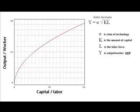I have used a graphing calculator I found on the web to graph the Cobb-Douglas production function. Notice that as more capital is added to a fixed amount of labor, output increases, but at a decreasing rate.